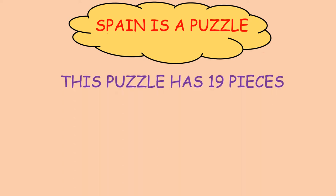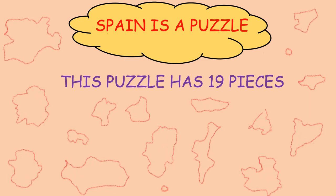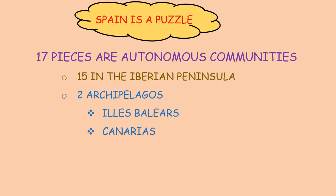Spain is a puzzle. This puzzle has 19 pieces. There are 17 pieces that are autonomous communities.